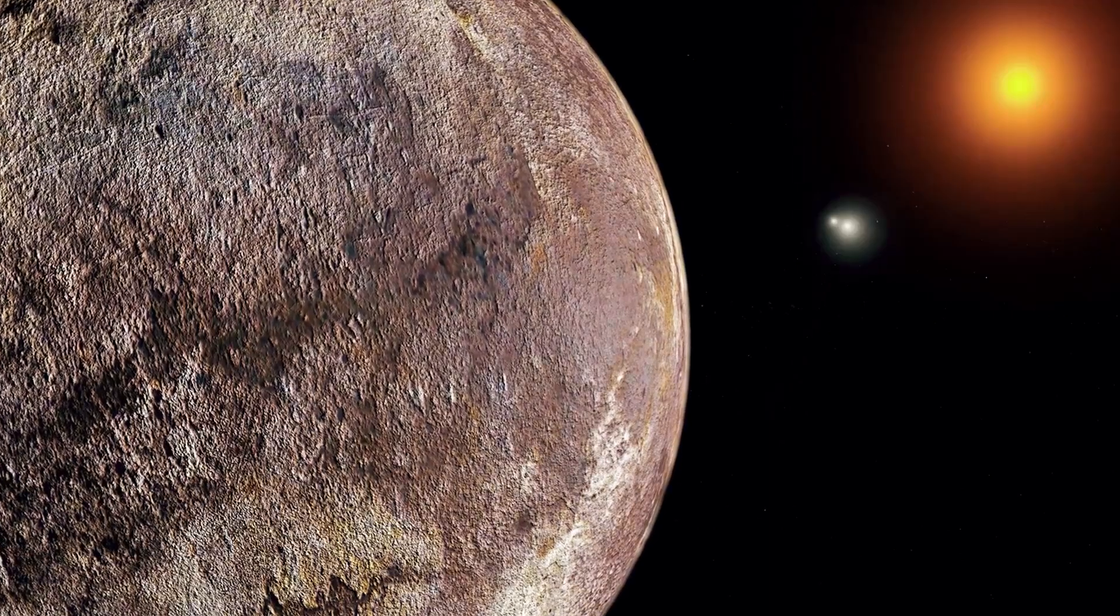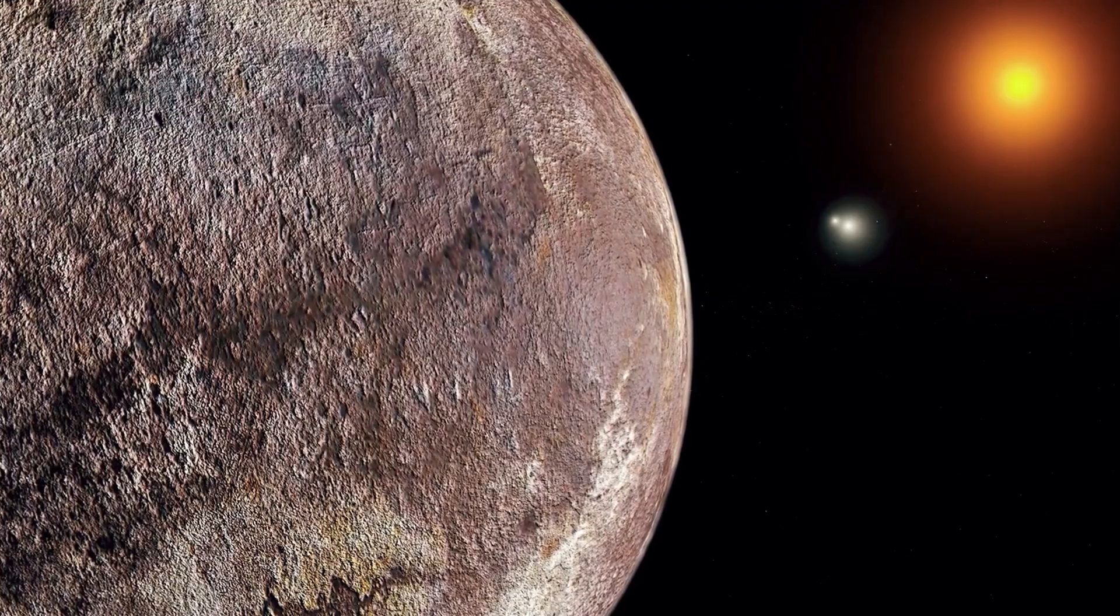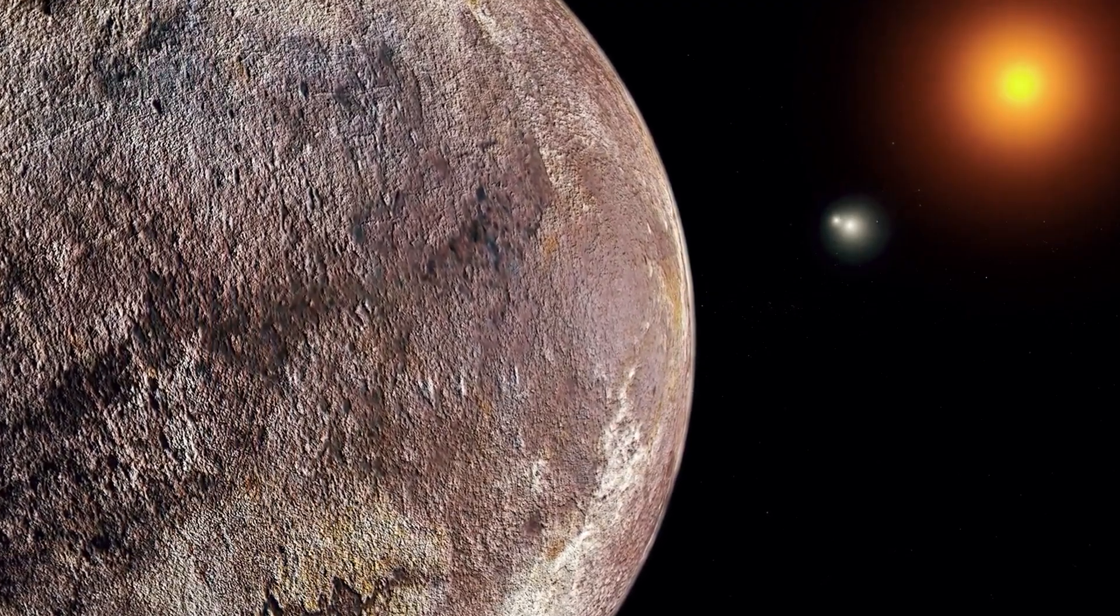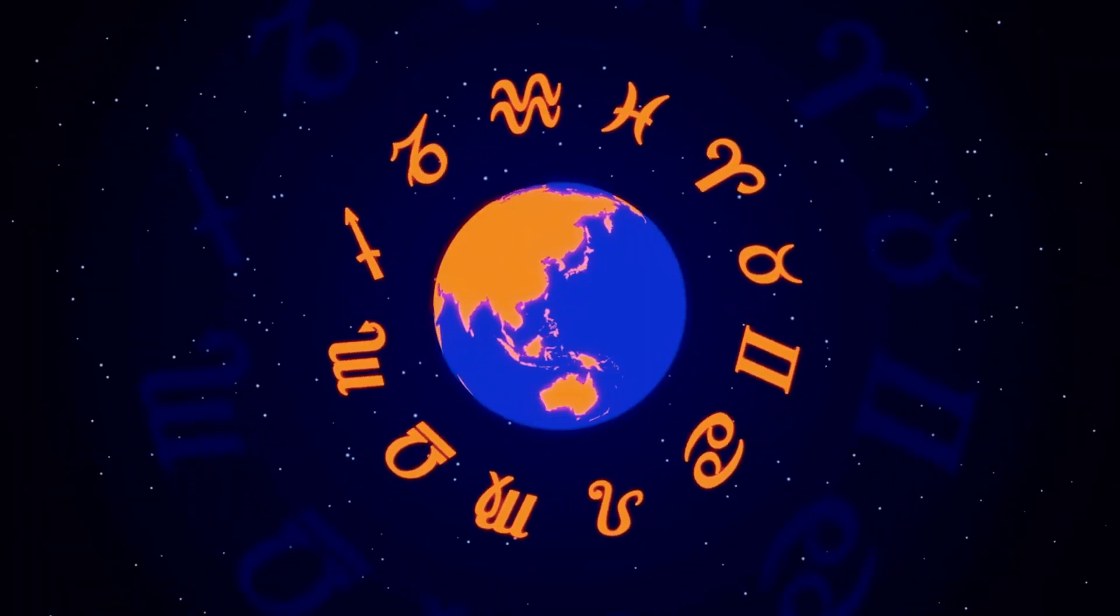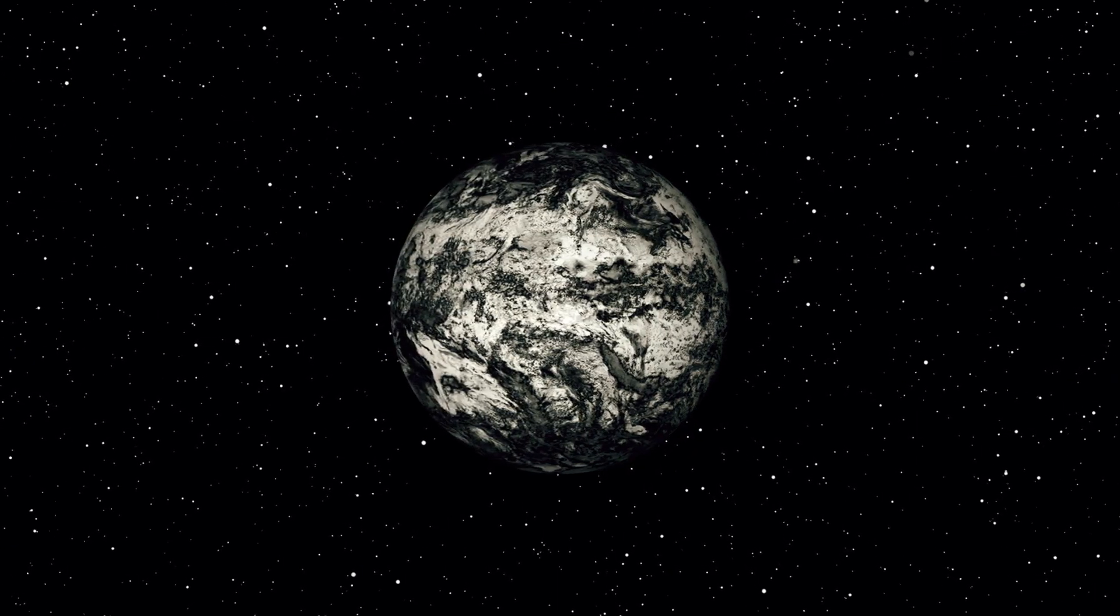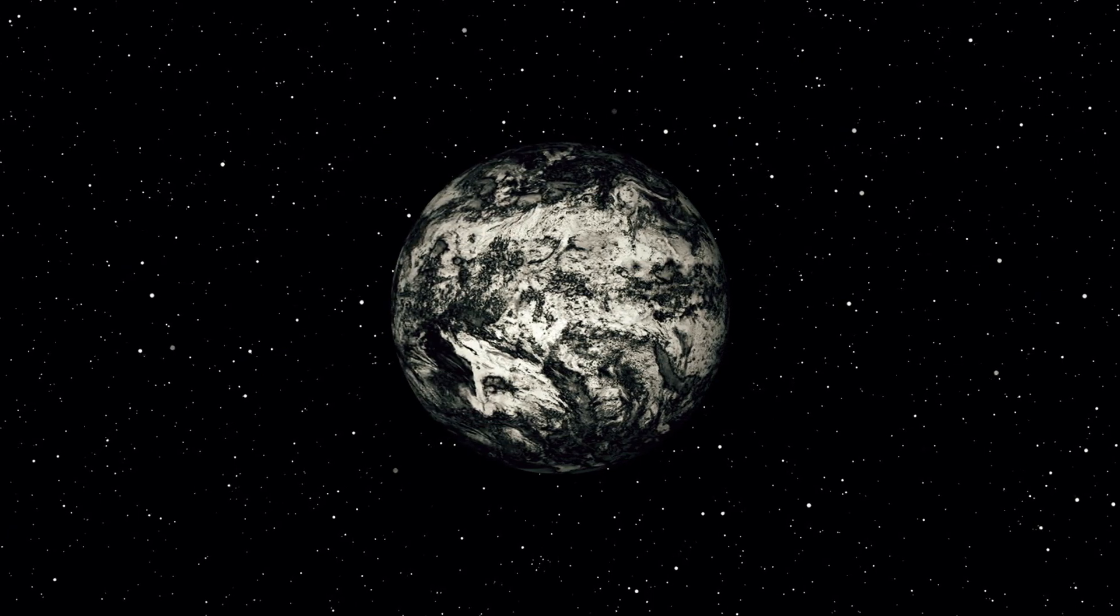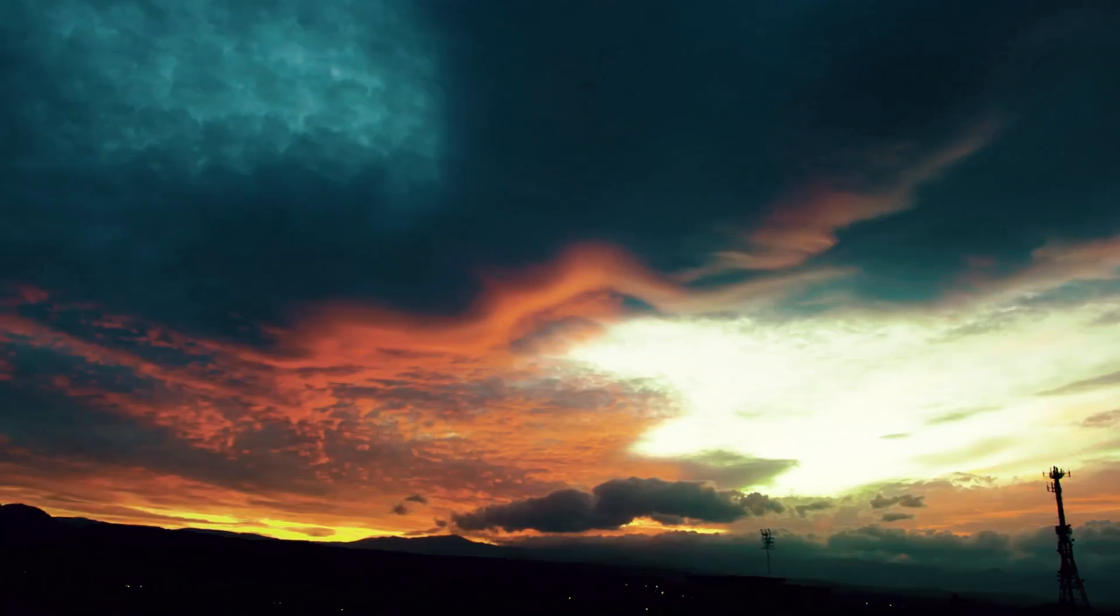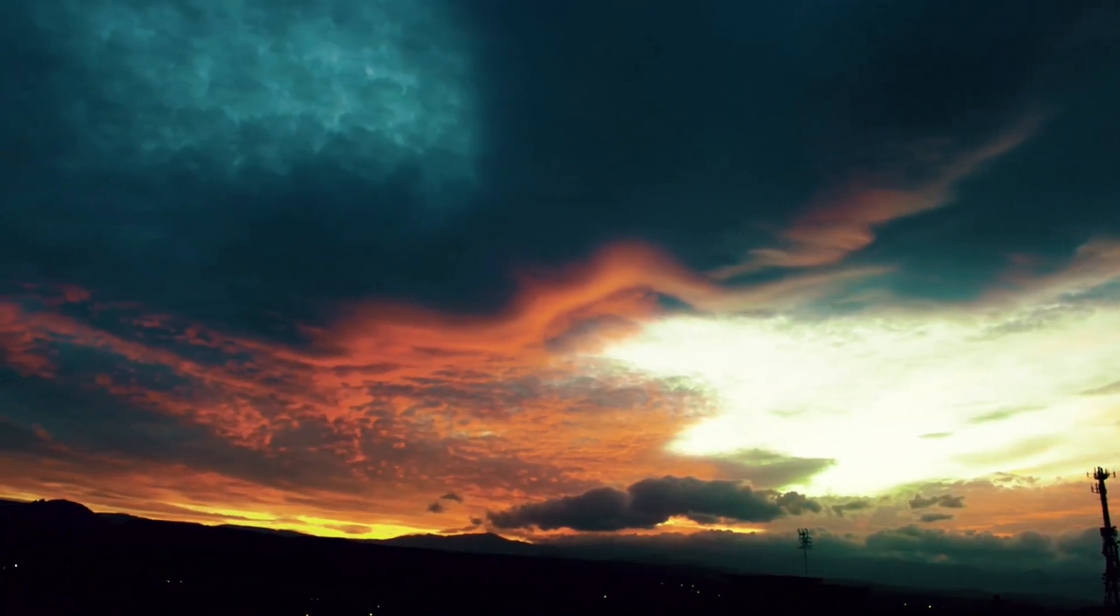The habitable zone around these stars is a celestial sweet spot where liquid water could exist. This tantalizing region has astronomers thirsty for signs of life. If a planet like Earth orbited there, Alpha Centauri A and B would blaze in its sky. Sunsets on such a world would be a dazzling light show.